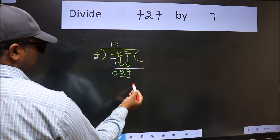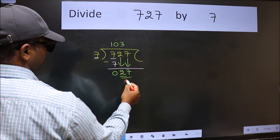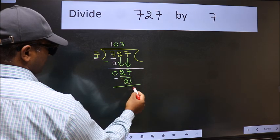Now 27. A number close to 27 in 7 table is 7 threes 21. Now we should subtract. We get 6.